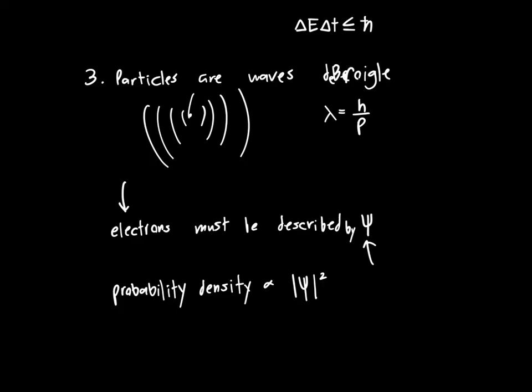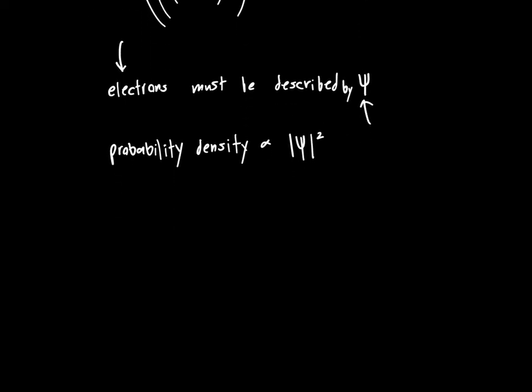So there's one question that you might be having, and that's, well, that's all great, but how do I do quantum mechanics? We can make these postulates, we can say all the interesting things we'd like, but how do we actually use it to solve engineering problems? And the answer is in the Schrödinger equation.